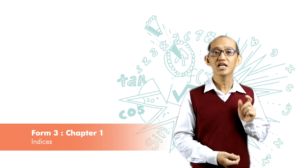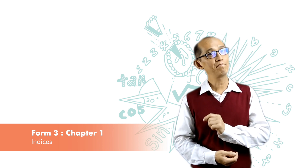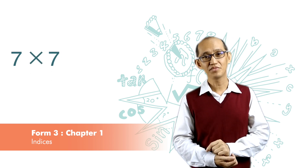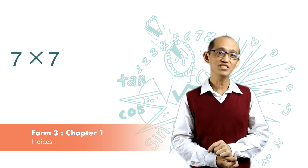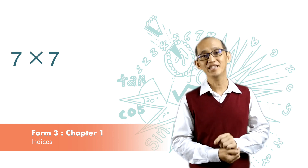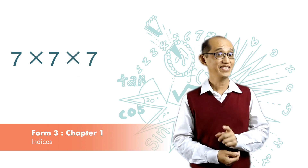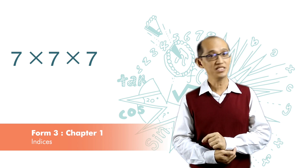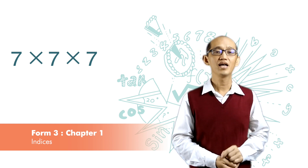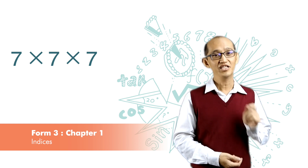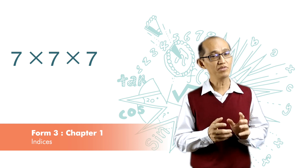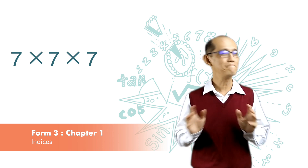Now, when a number is multiplied by itself — for example, 7 times 7 — we say it is 7 squared. When that number is multiplied by itself again, that is 7 times 7 times 7, it is 7 cubed. In this chapter, we are going to learn about the mathematics of a number multiplied by itself many times.